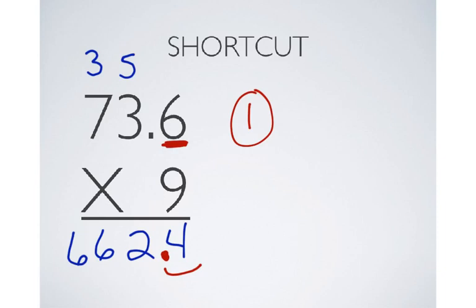So, in my problem, there's one decimal place here. So, in my answer, there has to be one decimal place. So, 73.6 times 9 is 662.4.